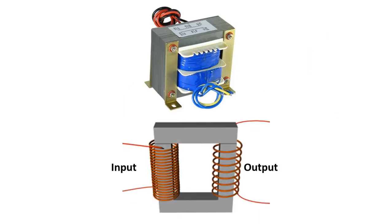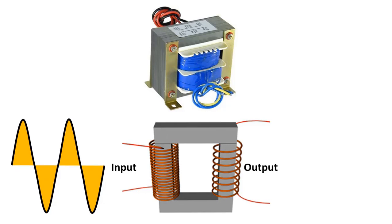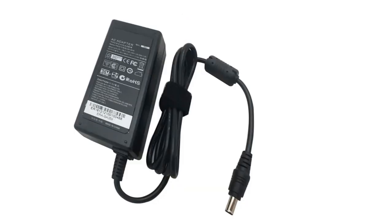There is also a coil inside the transformers that we use to increase and decrease the voltage value of alternating current. The voltage value is increased and decreased according to the ratio of the windings at the input and the output. When we look at the internal structure of a transformer, the voltage value of the sinusoidal wave at the input is decreased at the output since the winding number at the input is higher than at the output.